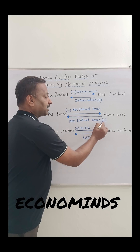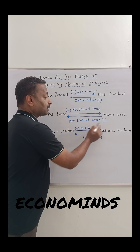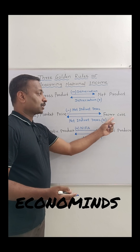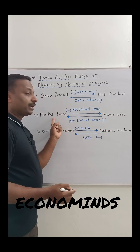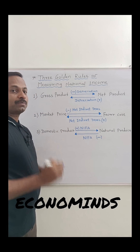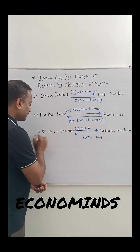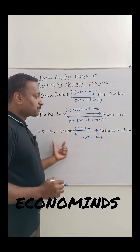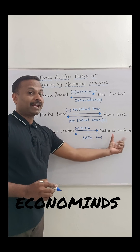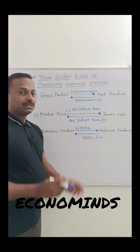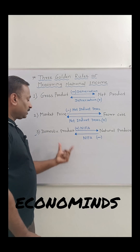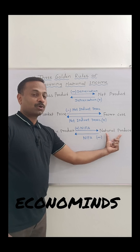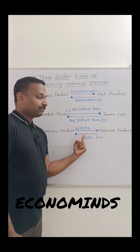When factor cost is given and we are going to calculate market price, simply add net indirect taxes (NIT) to the factor cost and you will get market price.